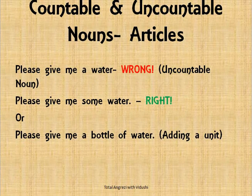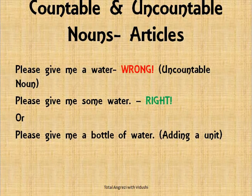Sometimes you have countable and uncountable nouns. For example: 'Please give me a water' — water is uncountable, so you say 'Please give me some water' and cannot use an article. However, if you give it a unit, such as a bottle or a liter, then you can use an article: 'Please give me a bottle of water.' The same applies to ice cubes — if you give an uncountable noun a unit, you can use an article with it.